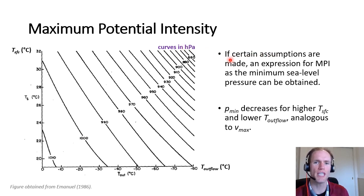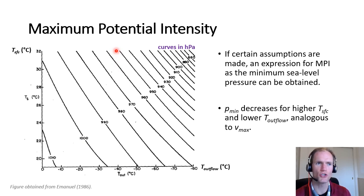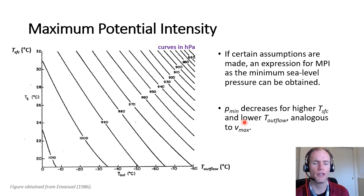We can also express MPI in terms of minimum sea level pressure. With certain assumptions, we obtain a minimum SLP corresponding to the maximum potential wind speed. The same structure applies — curves slope upper-left to lower-right. For a constant outflow temperature of −40°C, increasing surface temperature yields lower sea level pressure. For a constant 26°C surface temperature, decreasing outflow temperature lowers minimum pressure from about 1010 millibars in the bottom-left to 850 millibars in the upper-right — consistent with our wind speed results.